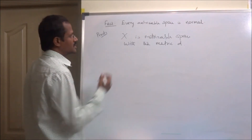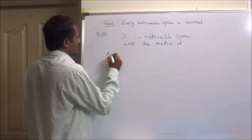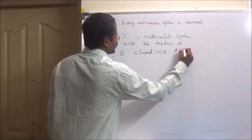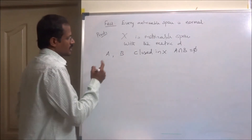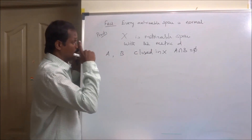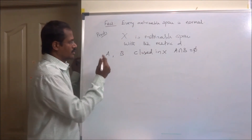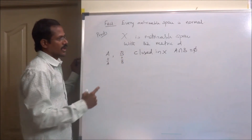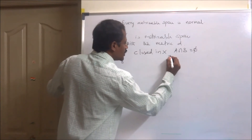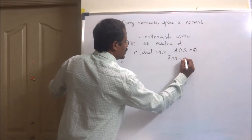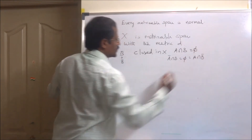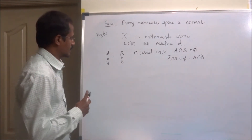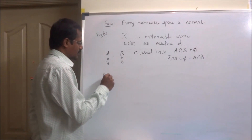Consider two disjoint closed sets in X, say A and B. So A and B are closed in X and are disjoint. Because A and B are closed, we know that a set is closed if and only if it equals its closure; therefore A equals its closure and B equals its closure. A ∩ B = ∅. We rewrite this as: A_closure ∩ B = ∅ and A ∩ B_closure = ∅.